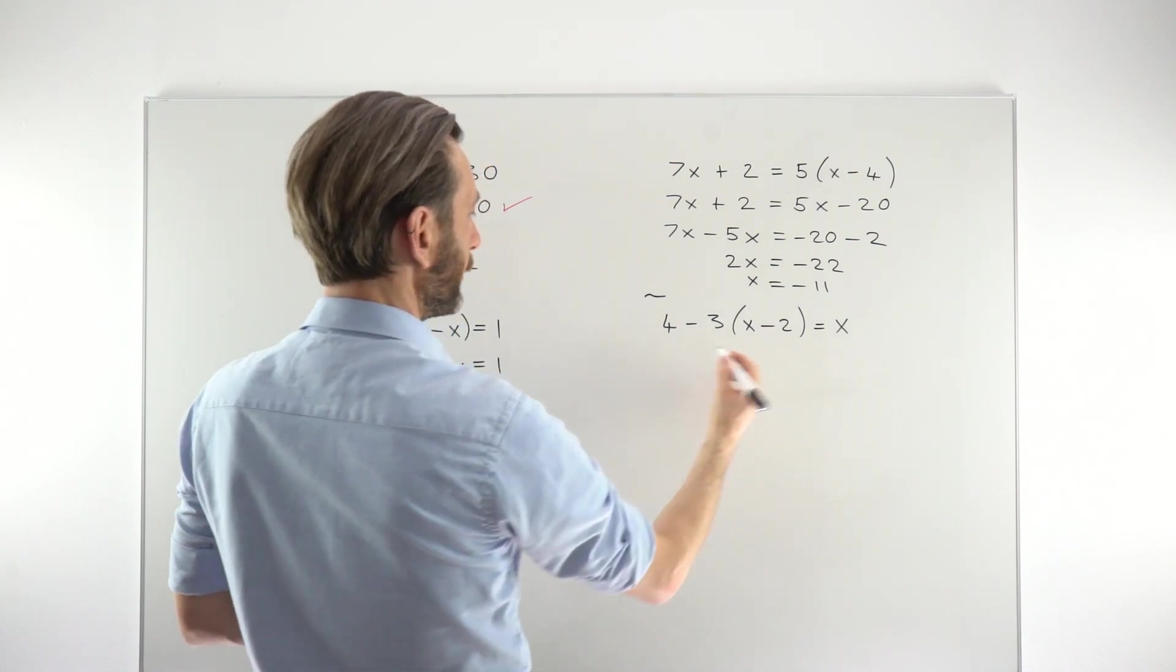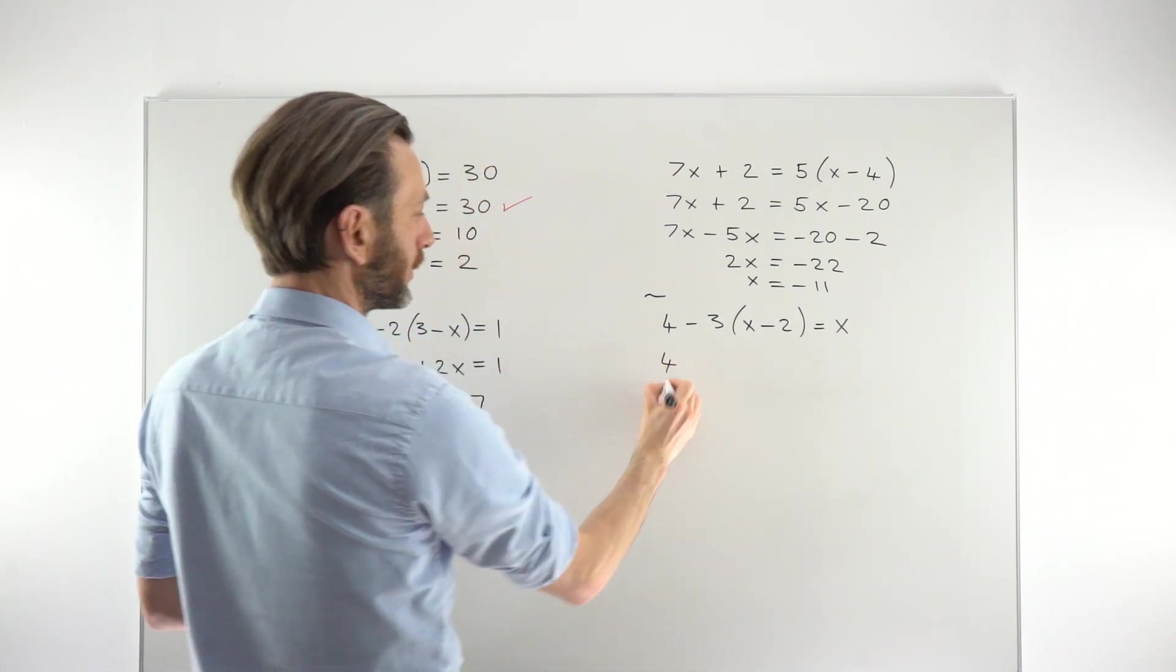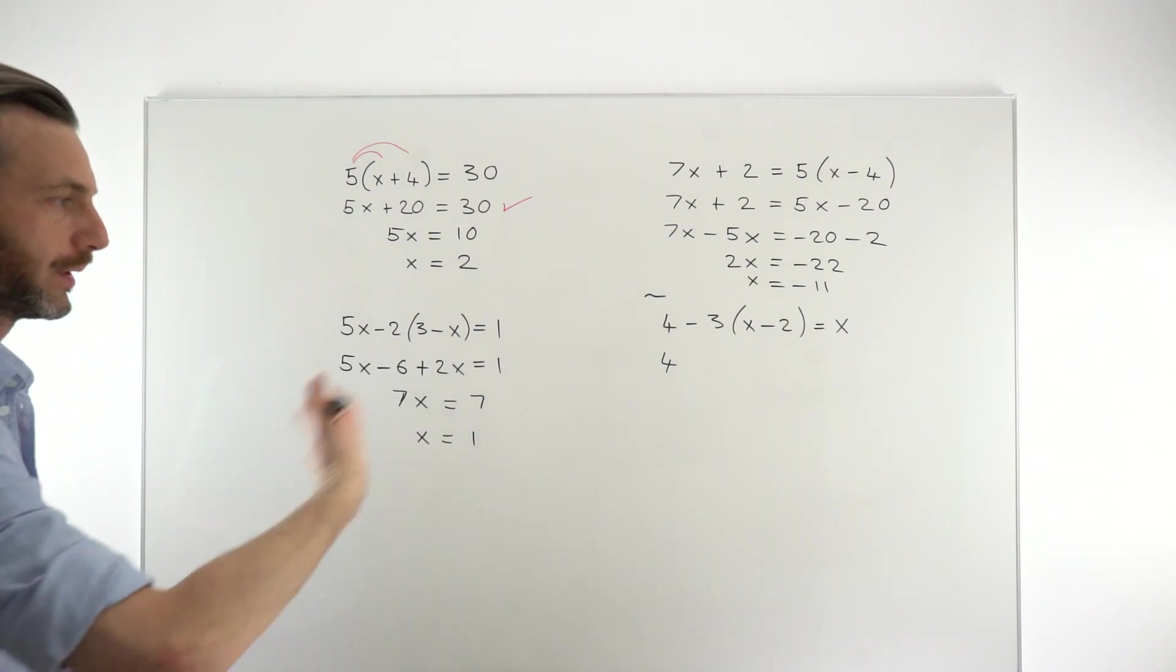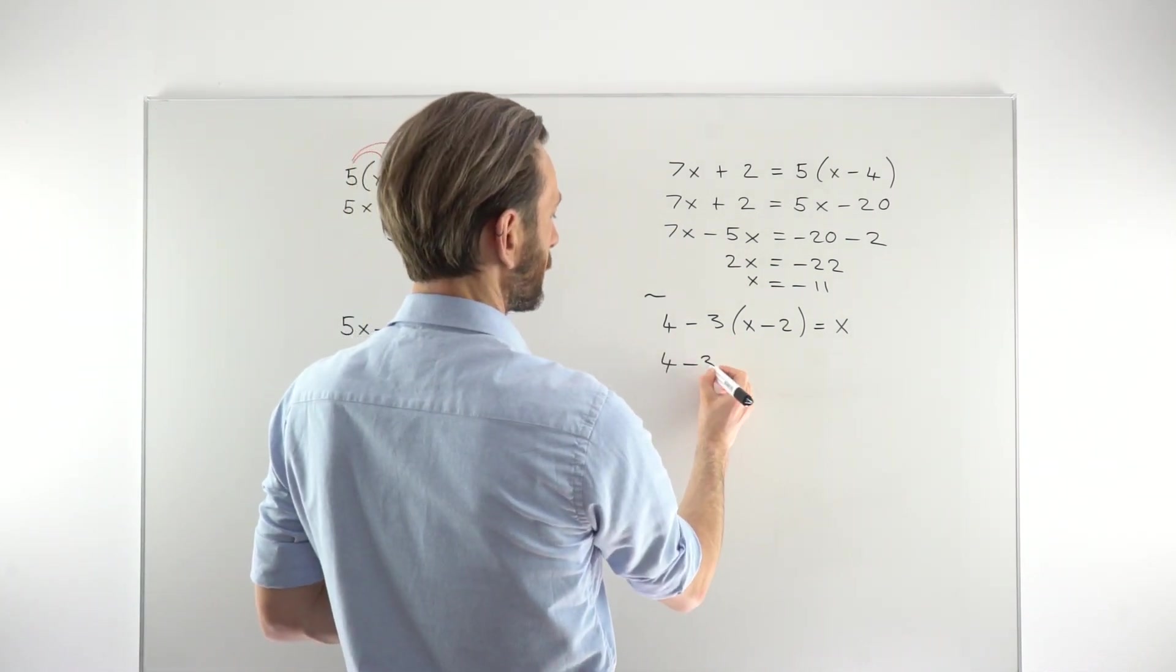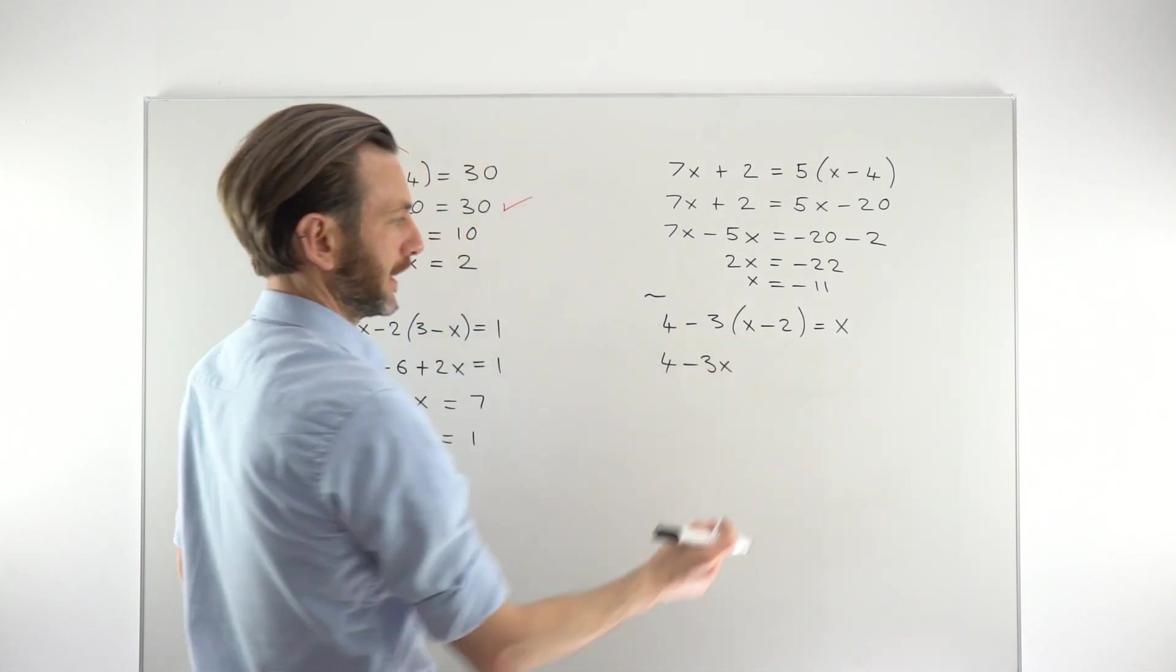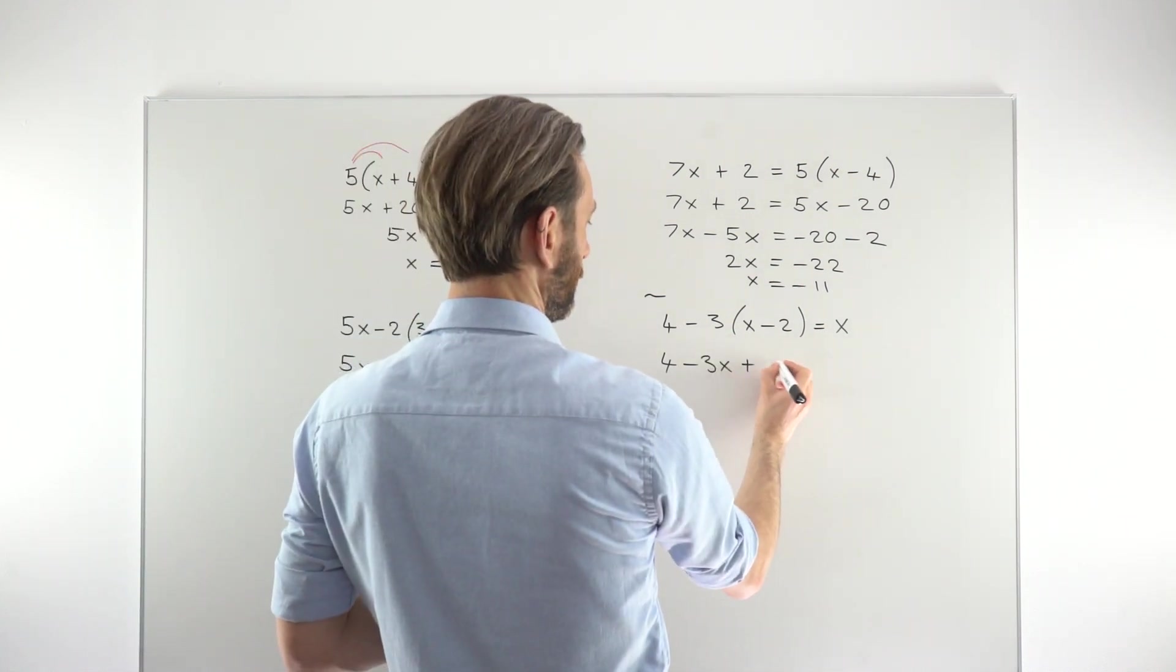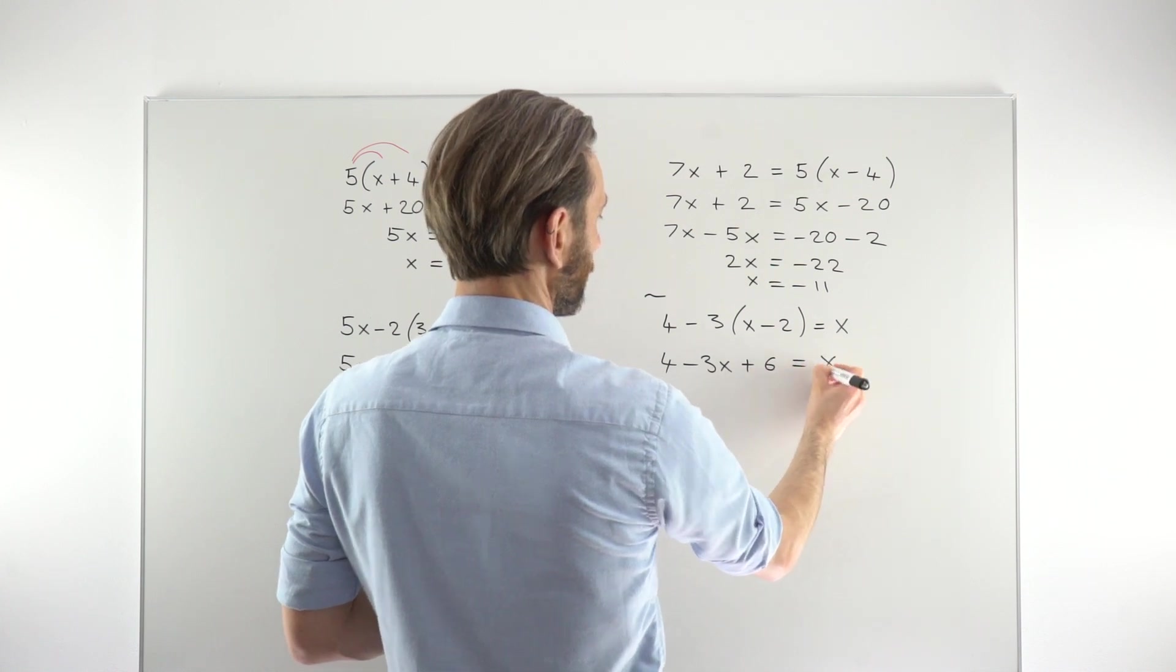Okay, so let's check out this one. So the 4 is not touching the bracket, so we're just going to leave the 4. We're going to start by expanding out the bracket again. So minus 3 times x is minus 3x. Minus 3 times minus 2, that's a double negative. So that's going to be plus 6 equals x.